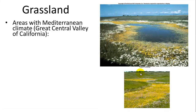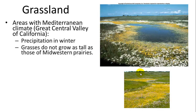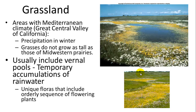Other grassland characteristics are found in areas with a Mediterranean climate, including the central valley of California. They have precipitation mostly in winter, and grasses don't grow as tall as those of the midwestern prairies — these are short grasslands. They usually have vernal pools, which are temporary pools that eventually dry up as the growing season progresses. They have a unique floral pattern, where as you get further from the vernal pool, different types of flowers occur in those areas.